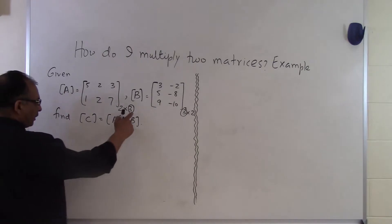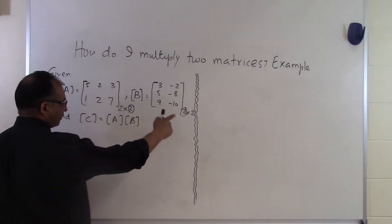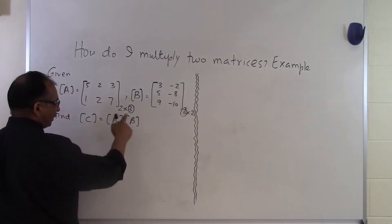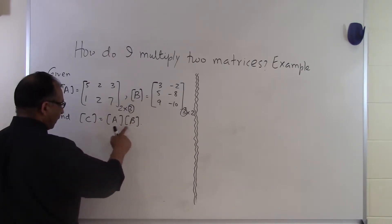If this was not the case, if the number of columns here was not the same as the number of rows here, then you would not be able to multiply A by B.